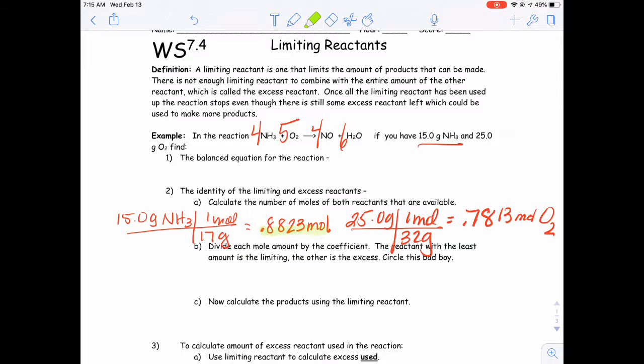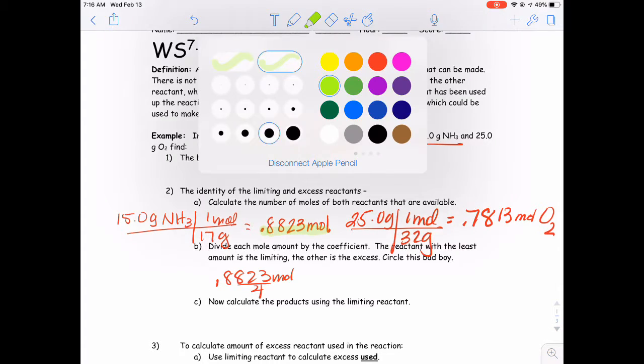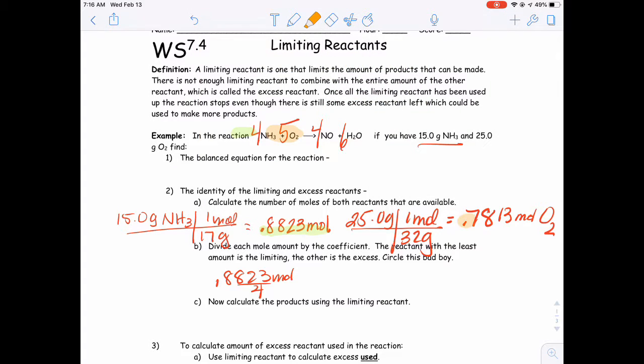The coefficient for the ammonia is a 4, so we're going to take .8823 moles divided by 4. The coefficient for the oxygen is a 5, so we're going to take .7813 moles divided by 5. When we do that, we get .2206 for the ammonia, and we get .156 for the oxygen. Which one is smaller? The oxygen is. So oxygen is our limiting reactant.